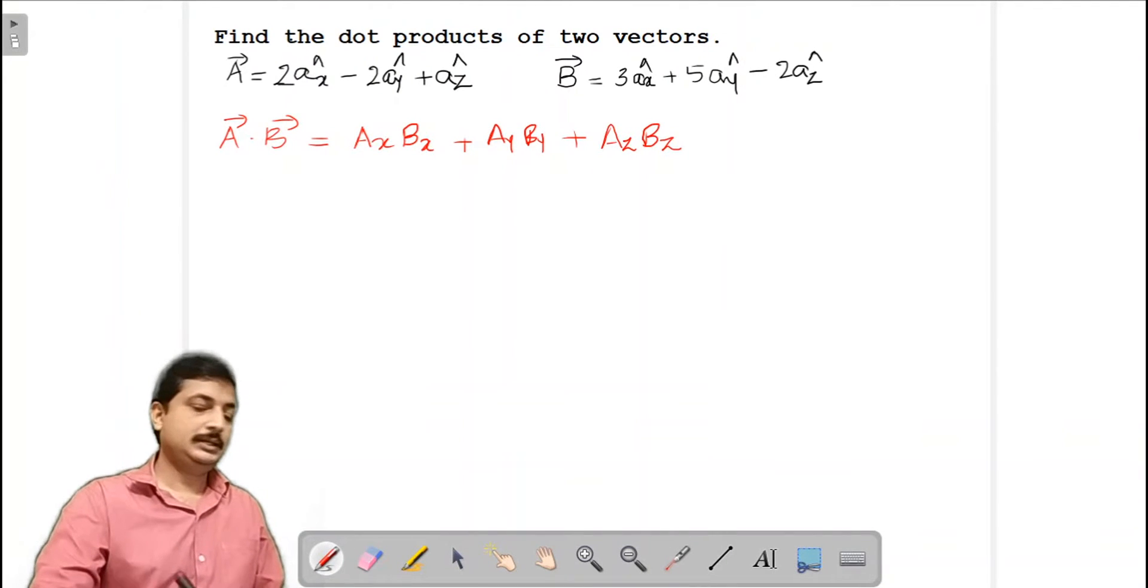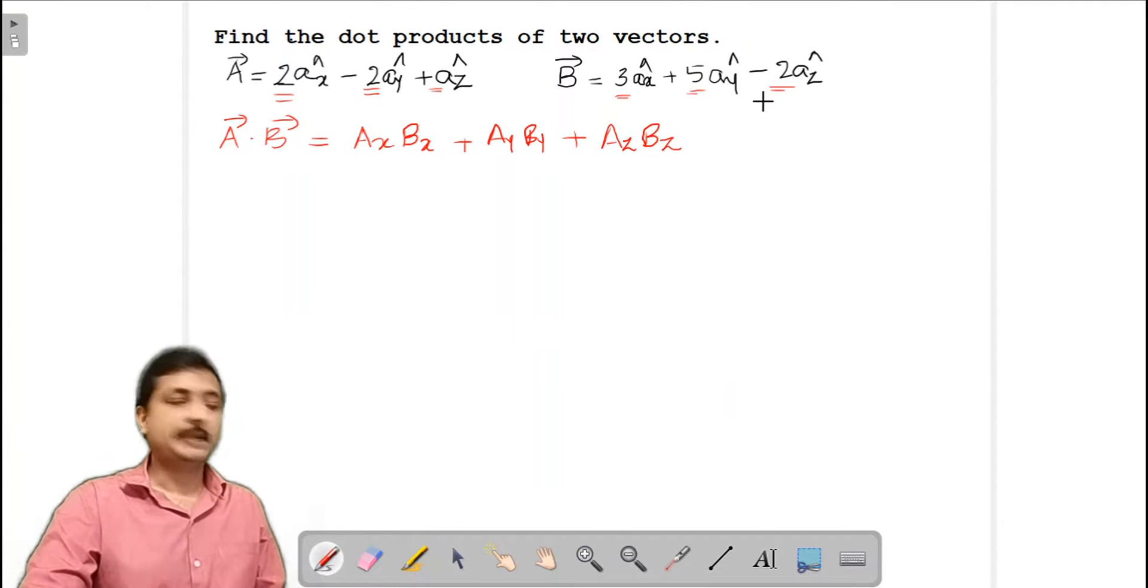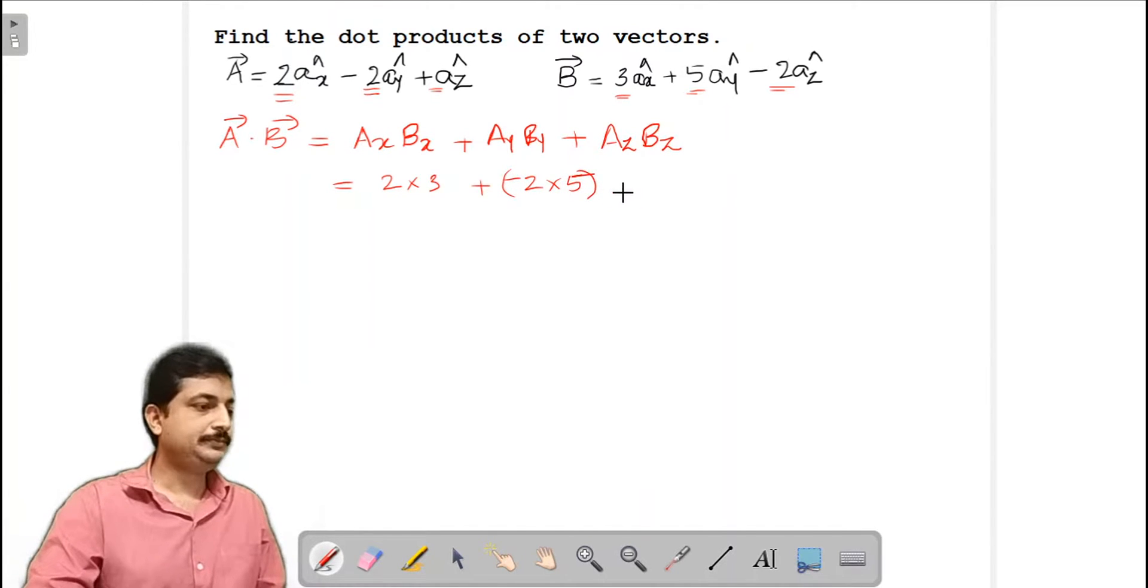So here ax is 2, ay will be minus 2, and az will be 1. bx will be 3, by will be 5, and bz will be minus 2. So substituting those values here, I get this as 2 into 3 plus minus 2 into 5 plus az is 1, 1 into minus 2.